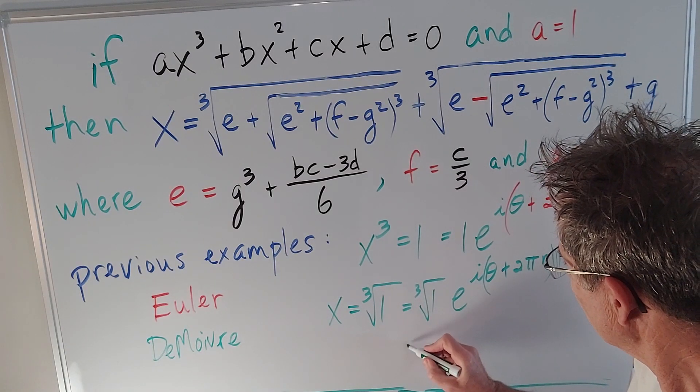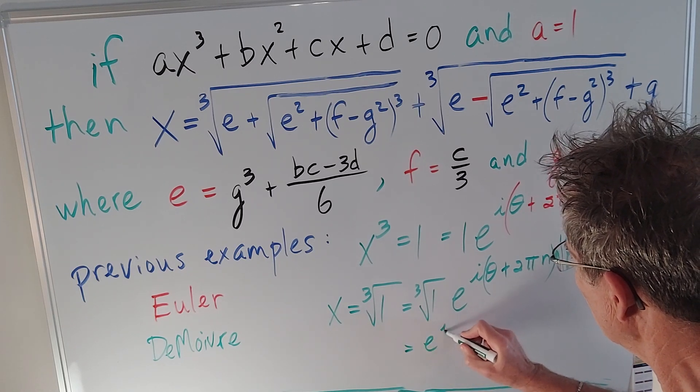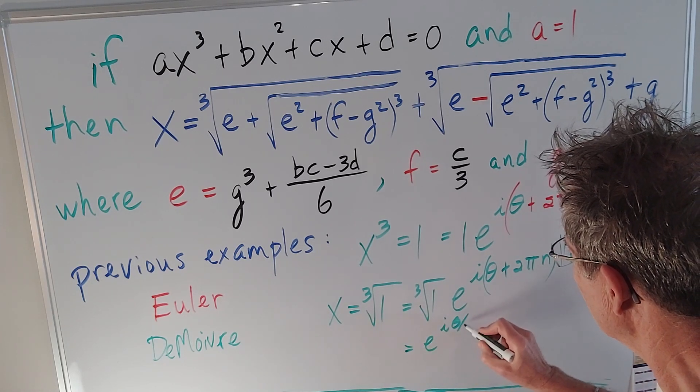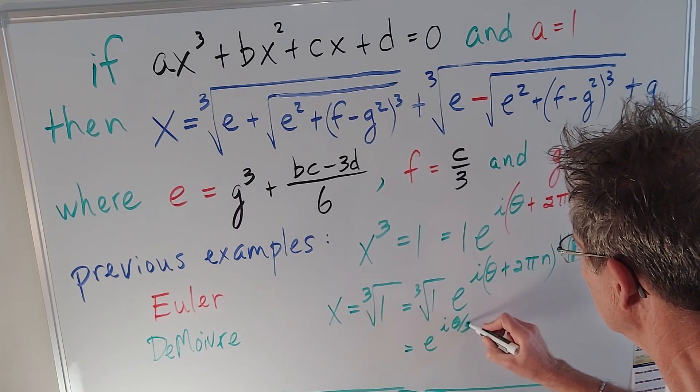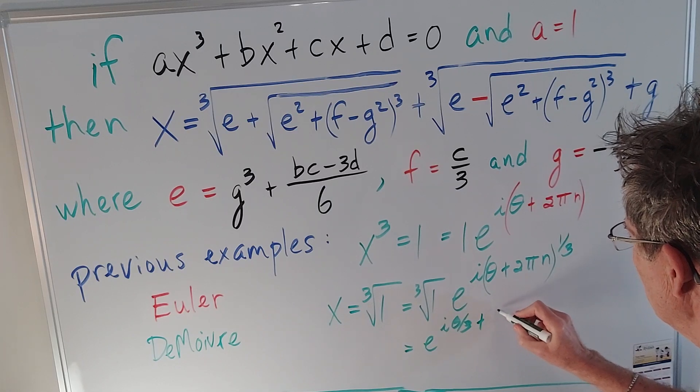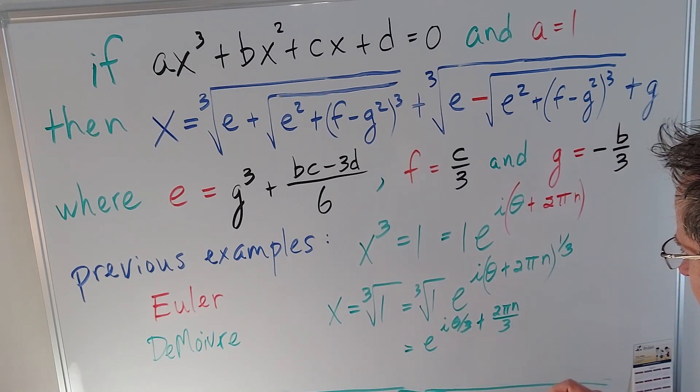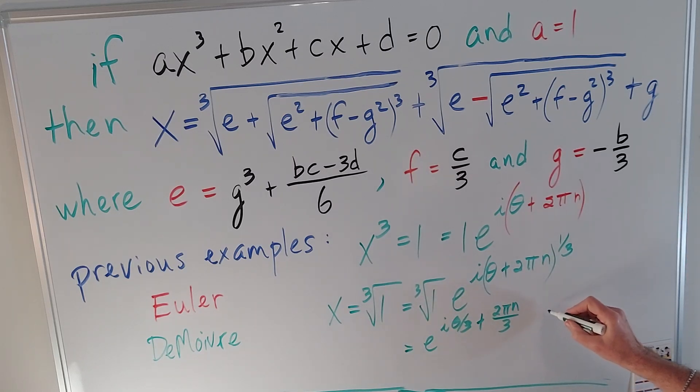So that'll just give me e^(i(θ/3 + 2πn/3)) where we only have to consider three possibilities for n: 0, 1, and 2, after which point the answer will start repeating.